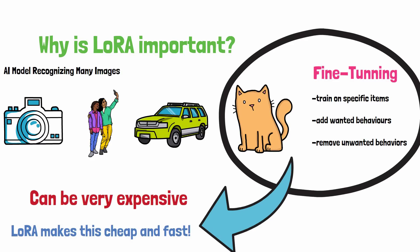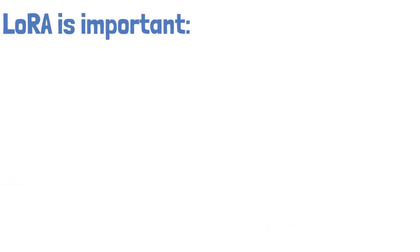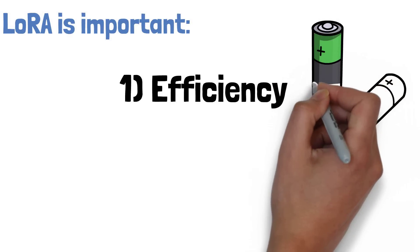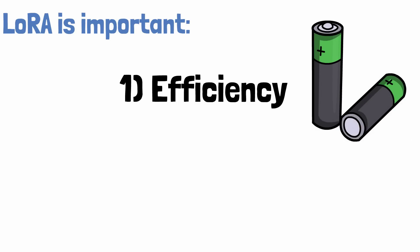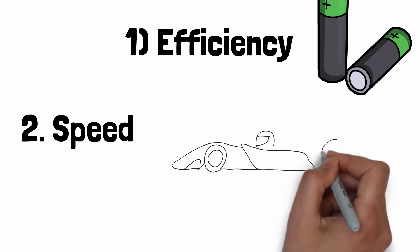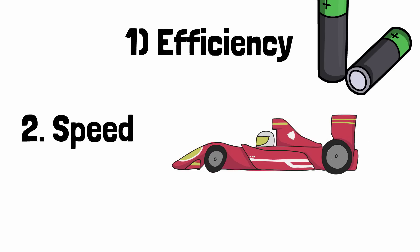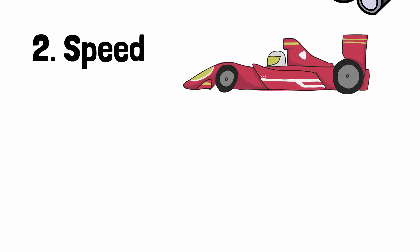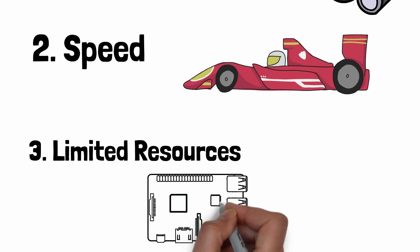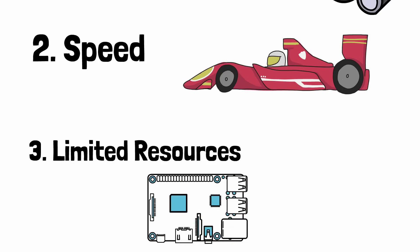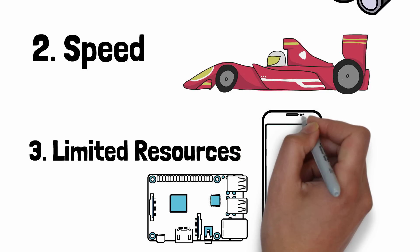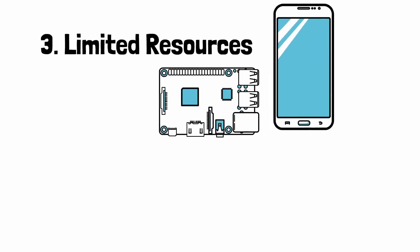Fine-tuning large models can be very expensive in terms of hardware and time. LoRA solves this by making it cheap and fast to fine-tune smaller models. LoRA is important for three main reasons: efficiency — it greatly reduces the resources needed to train AI models; speed — lower-rank models are faster to train and provide faster outputs, which is crucial for real-time applications; and limited resources — devices with limited computational power, like smartphones, can run low-rank adaptations for specific tasks even when they can't run a full large language model.